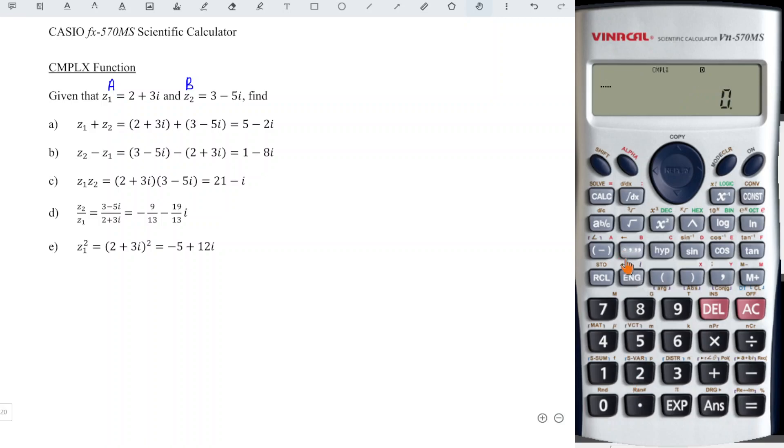We will first store the value. So we have 2 + 3i. We just have to press ENG, and we press Shift RCL to get store, and immediately press the button that contains any letter, for example a, without pressing alphabet.